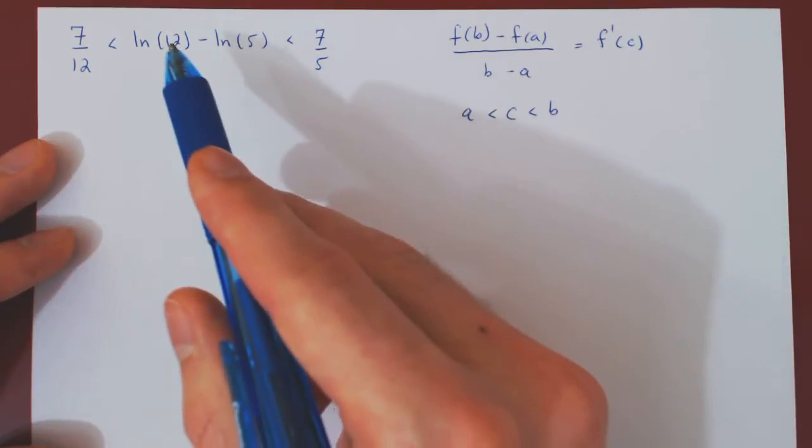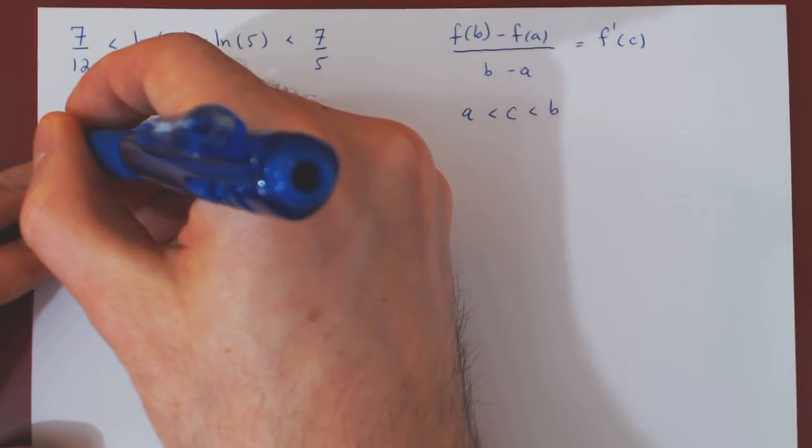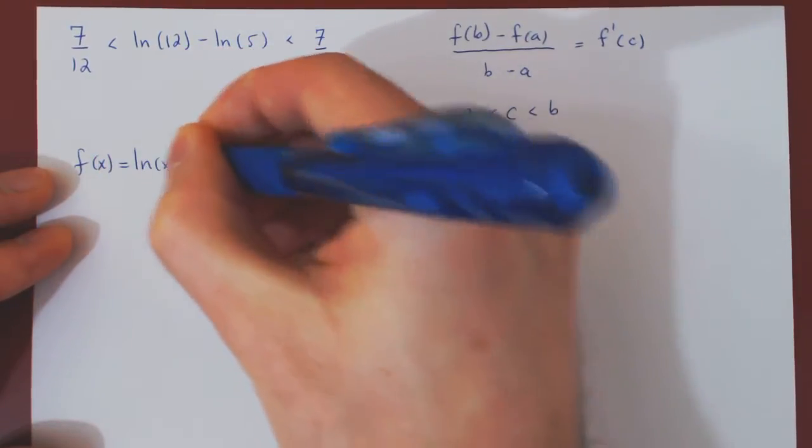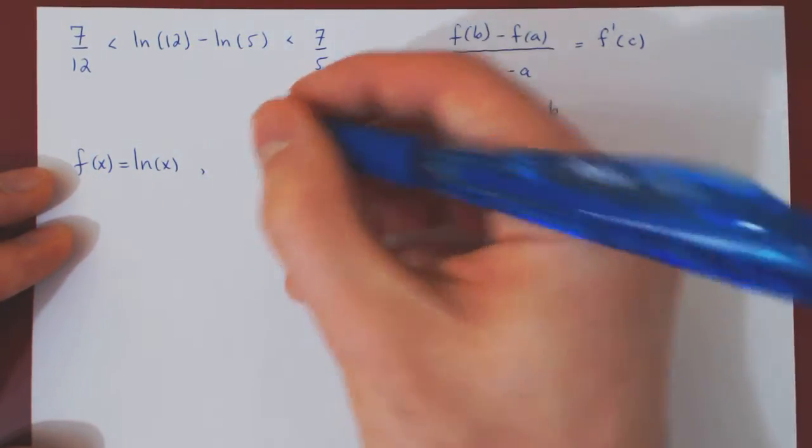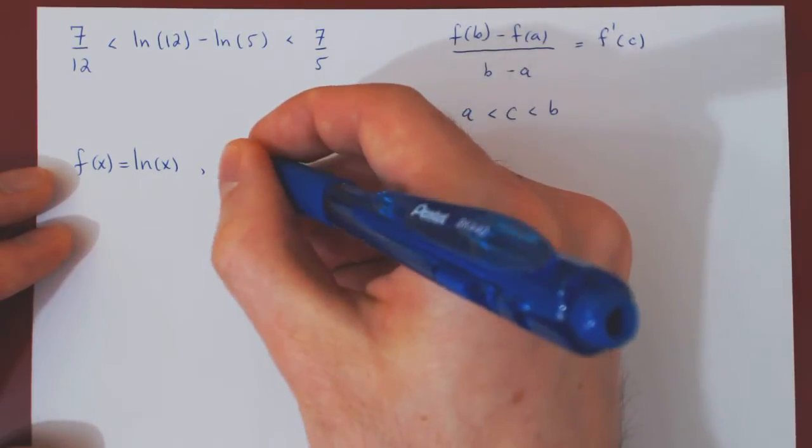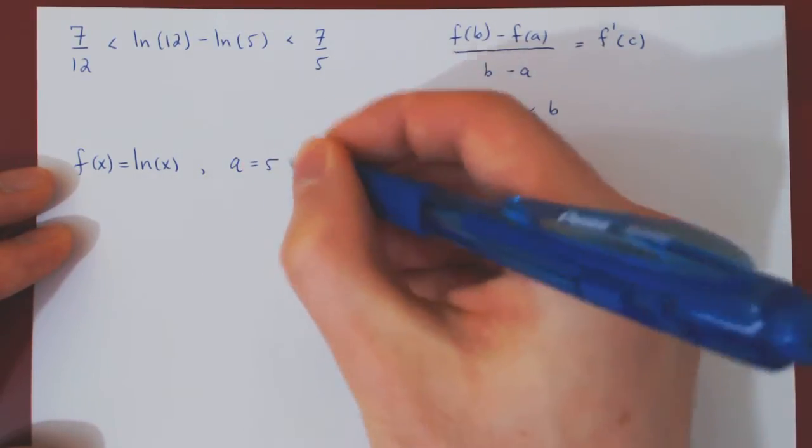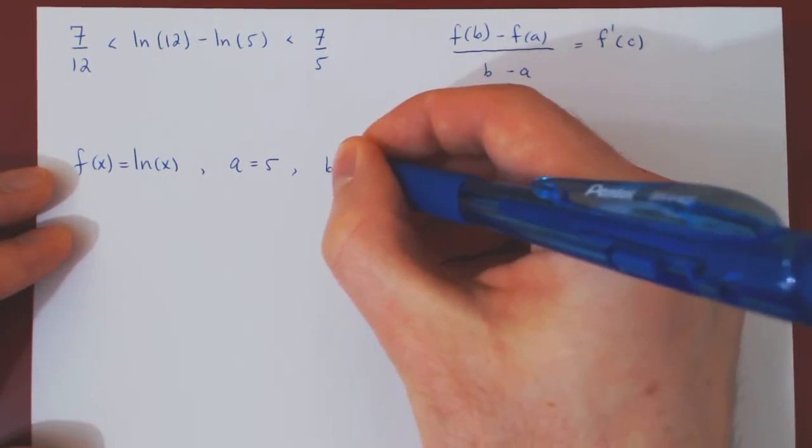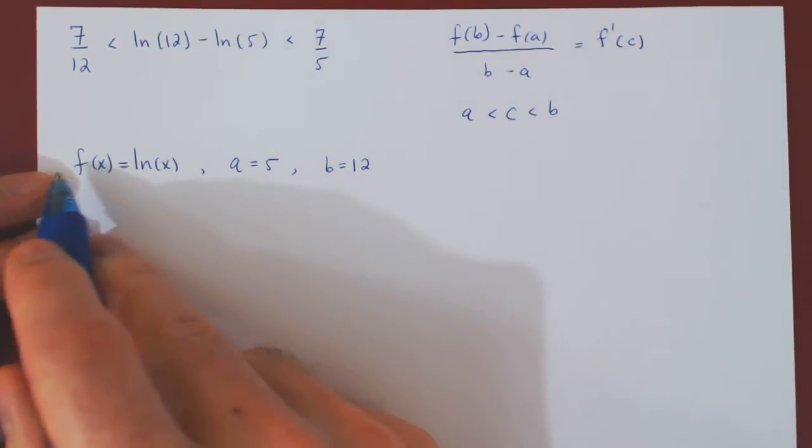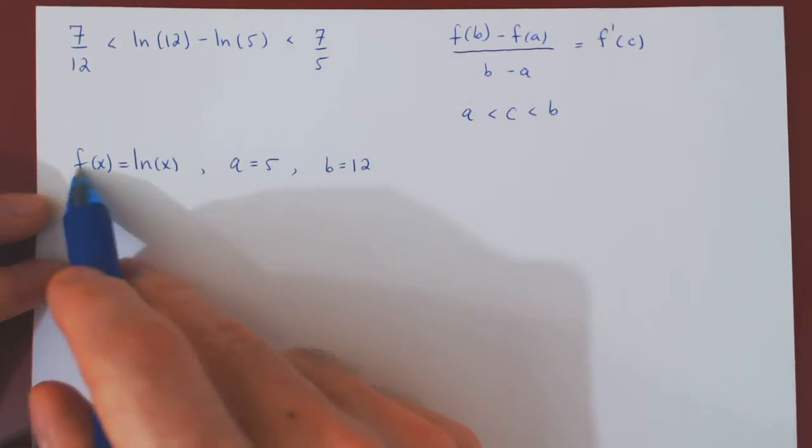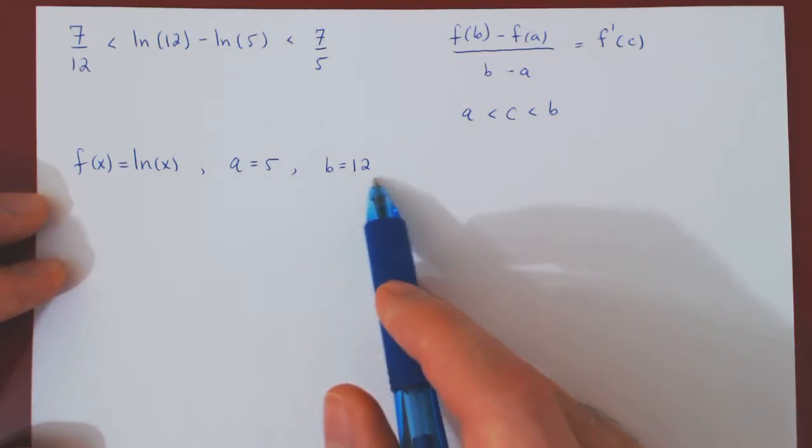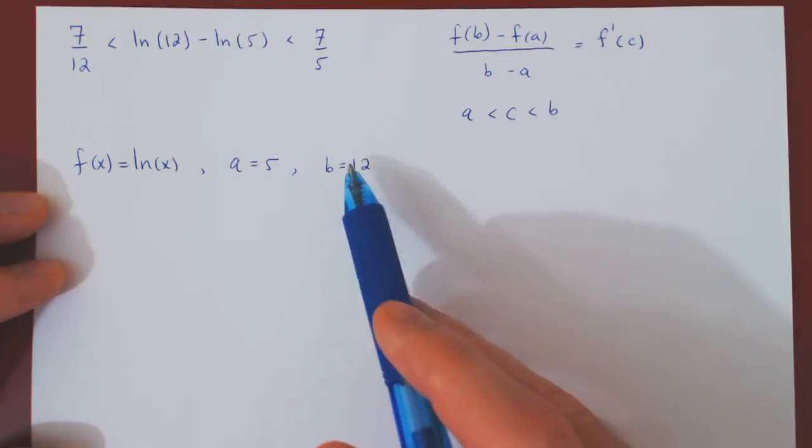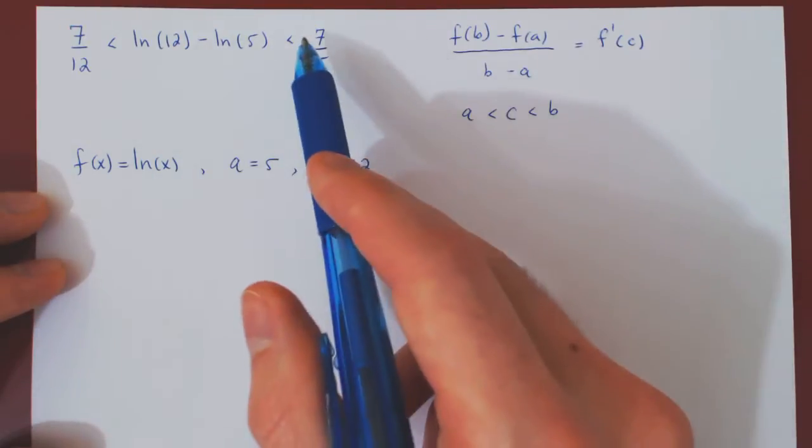So the function seems to be quite simply ln of x. And the value of a seems to be 5. And the value of b seems to be 12. So what we have right now is a guess. It seems that this is the choice of function, the choice of a, the choice of b.